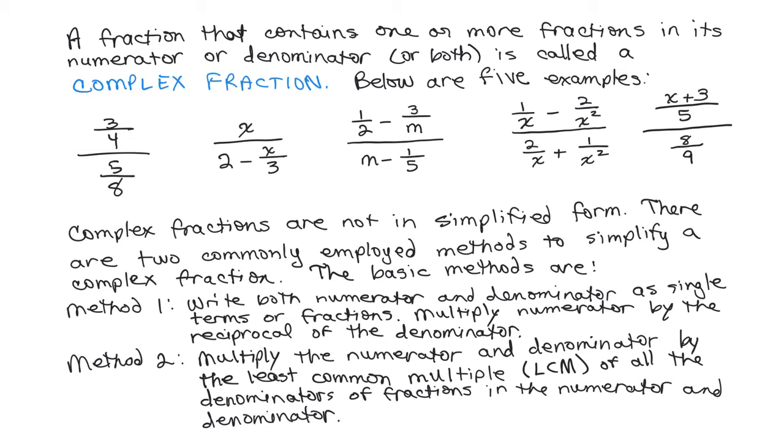In method 2, you don't need to have it in the form as the very first example. Instead, to simplify the complex fraction, the first step would be to multiply the numerator and denominator by the least common multiple of all the denominators of all the fractions in the numerator and the denominator.